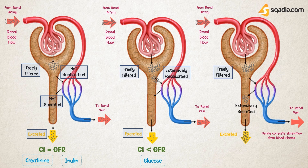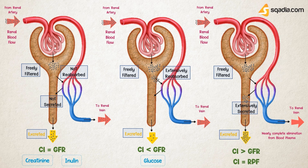Now imagine a scenario where a substance is not only freely filtered, but extensive secretion mechanisms are also involved. These mechanisms will move an additional amount of that substance from the peritubular capillaries into the tubular lumen. In this case, the excreted amount would be far greater than the amount filtered, meaning the renal clearance of such substances will be relatively high — it appears as though nearly all of the substance is removed from the blood plasma in a single pass through the kidneys. Therefore, the renal clearance is found to be very high compared to the GFR, such that the renal clearance of these substances almost equals the renal plasma flow, because the amount excreted by the kidneys is almost equal to the amount entering the kidney through the renal artery.